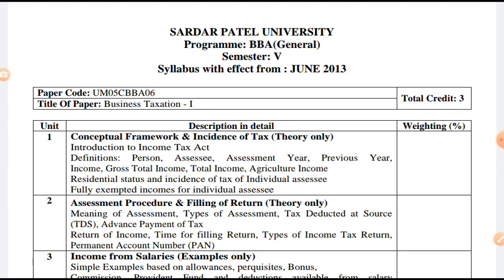Regarding taxes and provisions under the Indian Constitution: the Central Government is authorized to collect tax revenue from income tax (except on agriculture income), excise duty (except on alcoholic drinks), and custom duties. State Governments are authorized to get tax revenue from sales tax, value added tax, excise, and tax on agriculture income. Municipalities are entitled to get tax revenue from octroi and house property tax.